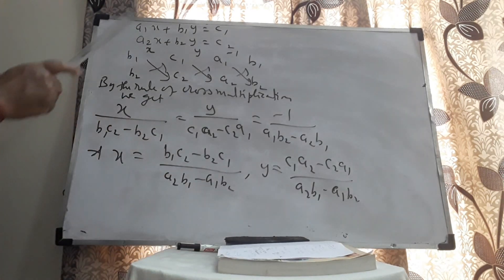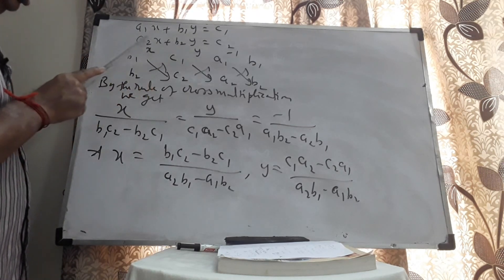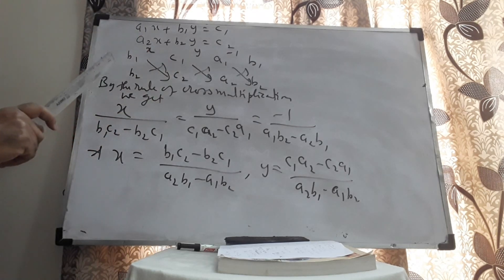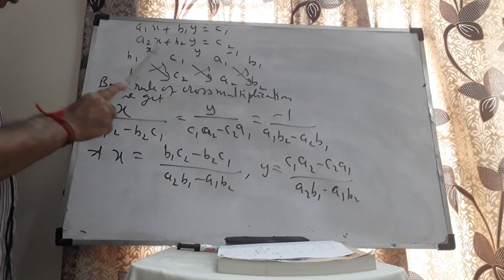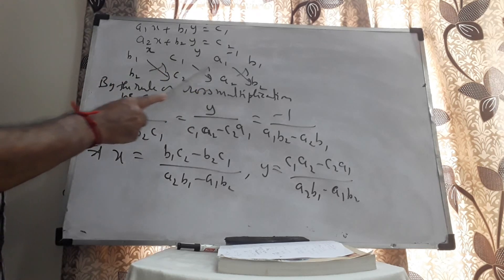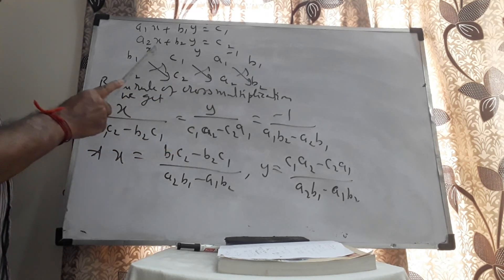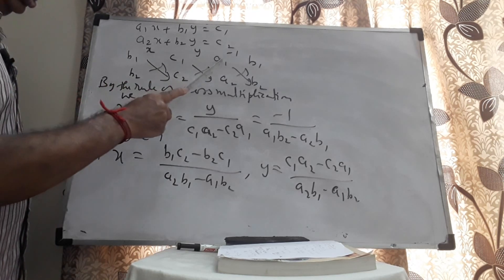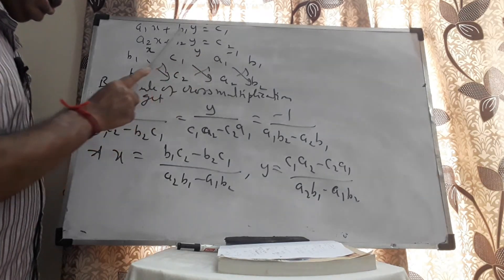Let me explain once again. I have taken the general system A1x plus B1y equal to C1 and A2x plus B2y equal to C2. To solve using cross multiplication, I start writing from the middle coefficient: B1, C1, A1, again B1; then B2, C2, A2, again B2. In between the first two entries I write x; in between the second and third entries I write y; and in between the third and fourth entries I write minus 1, provided constants are on the right-hand side.